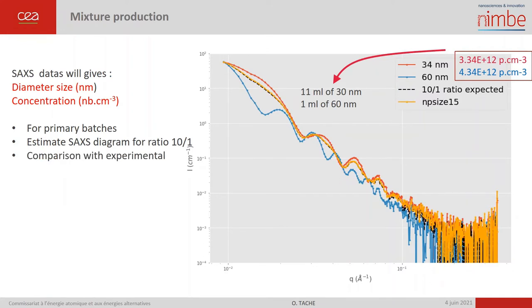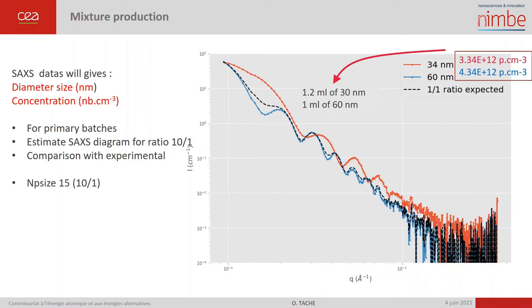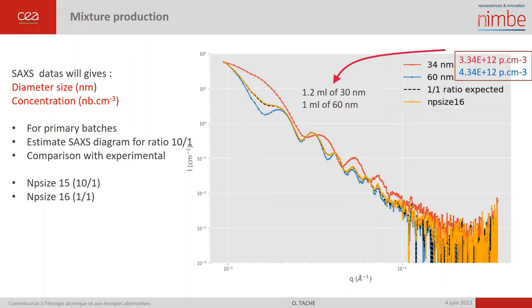Here you have the experimental signal of the mixture after mixing with different ratios: NP size 15 at 10 to 1, and NP size 16 at 1 to 1.